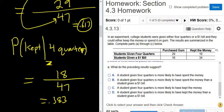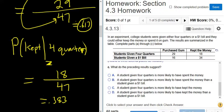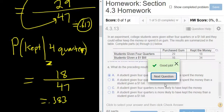It says, what do the preceding results suggest? Well, before we read the choices, because there's four choices and three of them are wrong, let's try to analyze this ourselves. So in both cases, the students were given four quarters. So if a student is given four quarters, there is a better chance that they spend the money, right? Because look, .617 probability that they spent the money, .383 that they kept it. So if you give a student four quarters, there is a higher probability that they will spend the money rather than keep it. So part A, a student given four quarters is more likely to have spent the money. Yep, I'm not even going to read the other choices. Just going to be brave and go with it. Yep, and that's right. I hope that made sense.